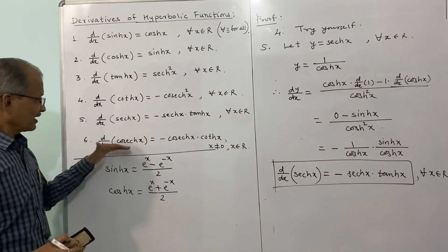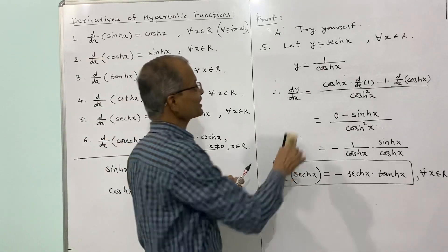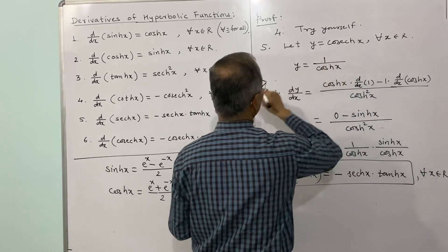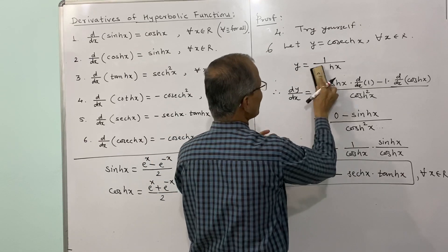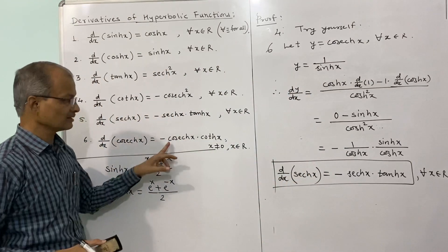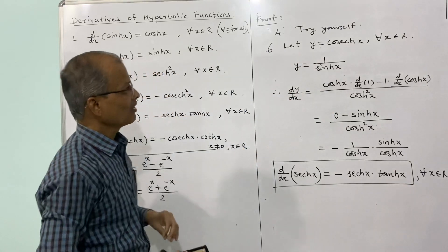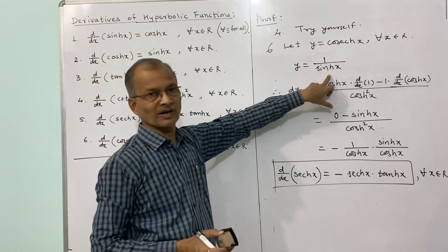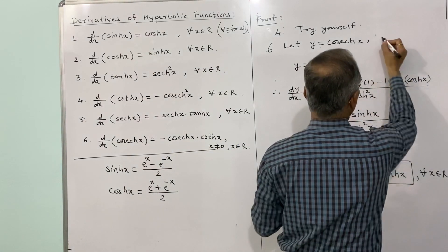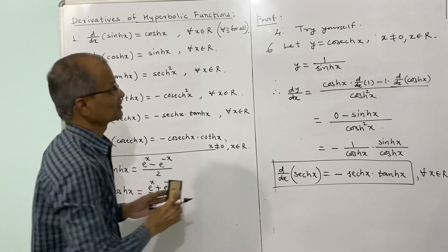The last result, the sixth, you should try yourself — it is similar to the fifth. For the sixth result, write y equal to hyperbolic cosech x, which is 1 divided by hyperbolic sin x. Use the same approach. Note the result is negative, and it is defined for x not equal to 0, since 1/hyperbolic sin x is not defined at x equals 0.